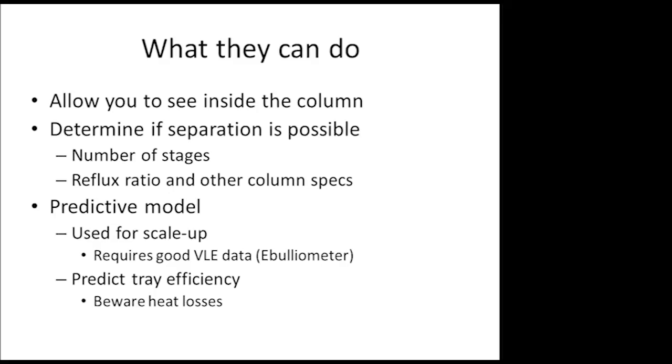Another thing that they can do is predict tray efficiencies. However, one thing that happens is that in an Oldershaw column, you get a lot of extra heat loss that you don't actually have. So you need to be careful in doing scale-up. Because if you think your reflux ratio is 2, you have a lot of heat loss going on. Your internal reflux ratio could be 2 as well, so your total is 4. And that is going to cause problems if you try to scale-up based on a reflux ratio of 2.